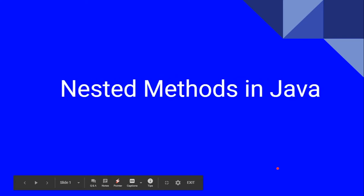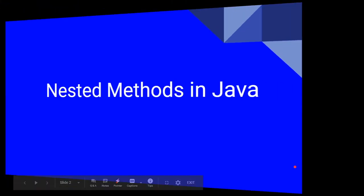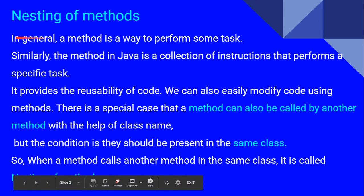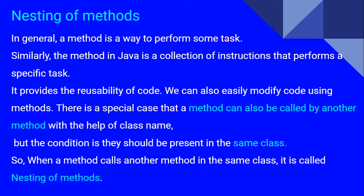In this video we are going to see about nested methods in Java. First, let us see what a method is, and then we will go for nested methods. In general, a method is a way to perform some task. Similarly, the method in Java is a collection of instructions that performs a specific task — for example, adding, printing, or getting some input. Specific groups of instructions are put into a block called a method.